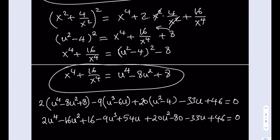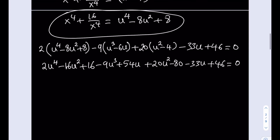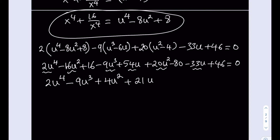Arranging the terms: 2u to the 4th minus 9u cubed — then for u squared: 20u squared minus 16u squared gives positive 4u squared — then for u: 54u minus 33u gives plus 21u — and for constants: 16 plus 46 is 62, minus 80 gives negative 18. So the simplified quartic is 2u to the 4th minus 9u cubed plus 4u squared plus 21u minus 18 equals 0.